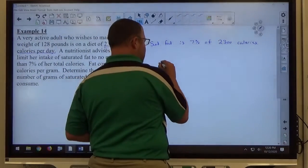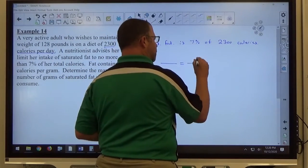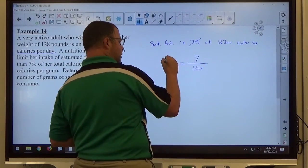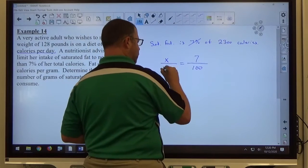If I make my percent proportion like we did last chapter, percent goes over 100, is unknown on top, over of 2300. Of 2300 on the bottom, saturated fat we don't know what it is on top.